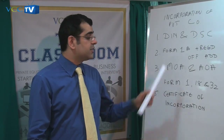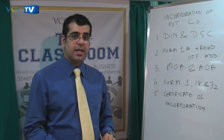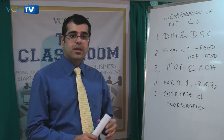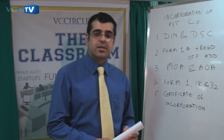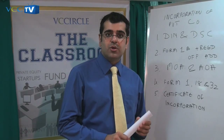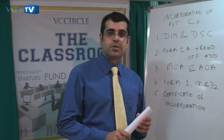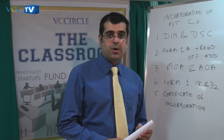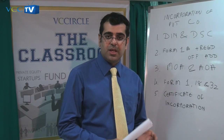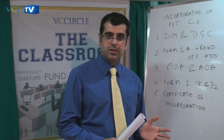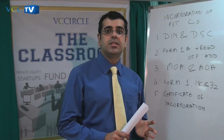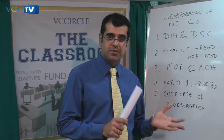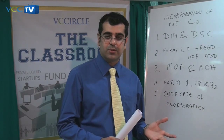The first form that is required to be filled for making a name application is Form 1A. In Form 1A, the applicant is required to give 6 options for the proposed name of the company in the order of priority. All of these names have to end with 'private limited.' Further, these names should have some significance to the activities that the company intends to carry out.